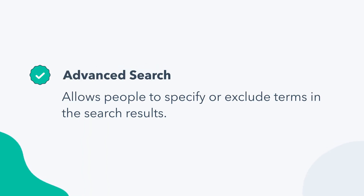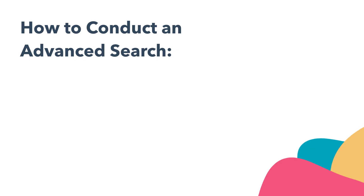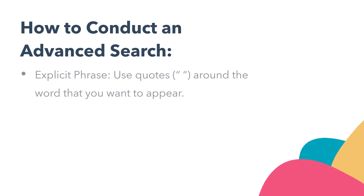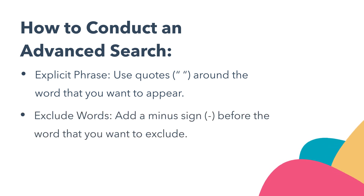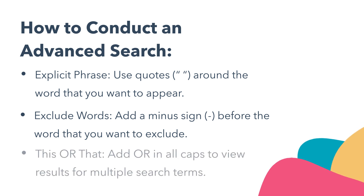A meta description gives the right people the right information at the right time. Although meta descriptions don't directly influence your website's rank on Google, they can benefit you when people conduct an advanced search. An advanced search allows people to specify or exclude terms in the search results. There are a ton of advanced search options: an explicit phrase using quotes, excluding words with a minus sign, or adding OR in all caps to view results for multiple search terms. This is why you want to get very specific when writing your meta descriptions. If your page content has specific words or phrases that people are searching for, you'll want to make sure that they're included in your meta descriptions.